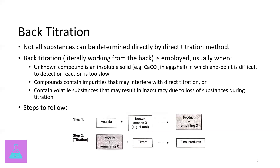Sometimes you have impurities in your compound — for example, calcium carbonate in egg shell is both an insoluble solid and a sample that contains a lot of impurities, so a direct titration could affect your results. A third situation is that there are some volatile substances that may be present in your sample, and any loss of them could result in an inaccuracy of your analysis.